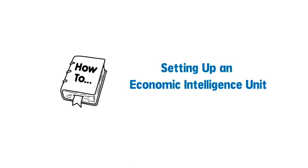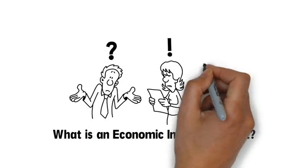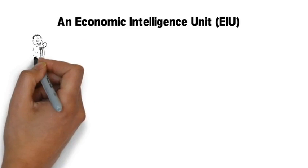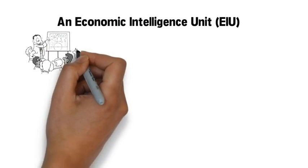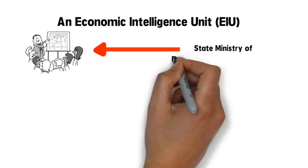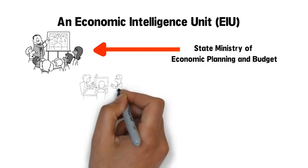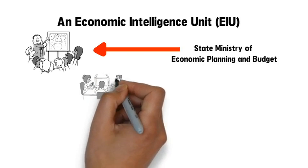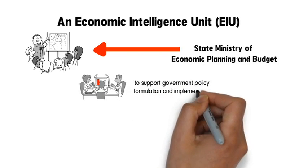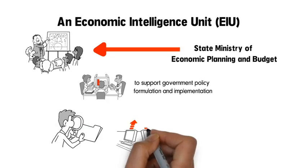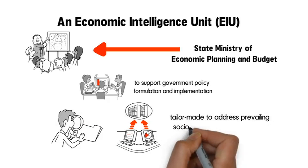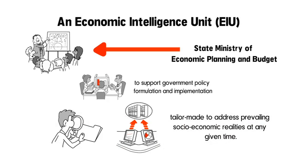Setting up an Economic Intelligence Unit. An Economic Intelligence Unit is the central economic think tank of government. It is the unit usually established under the State Ministry of Economic Planning and Budget to perform the function of conducting economic research and analysis to support government policy formulation and implementation through research, data collection, and analysis tailor-made to address prevailing socioeconomic realities at any given time.